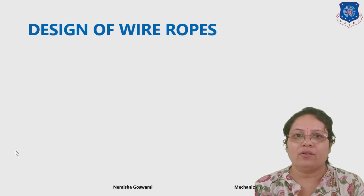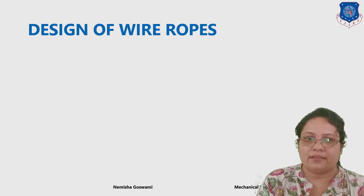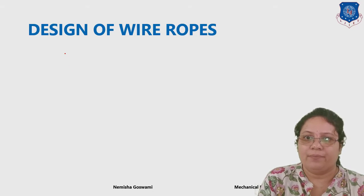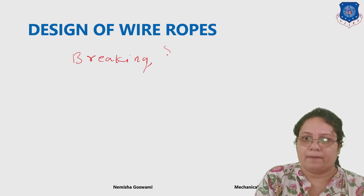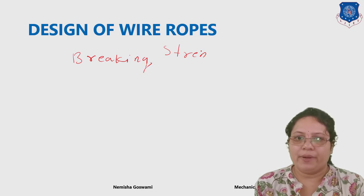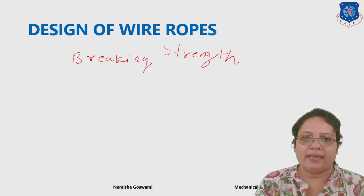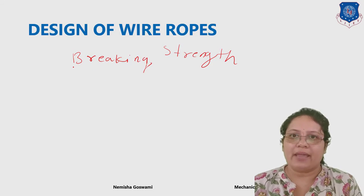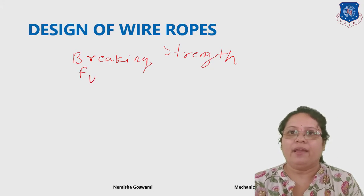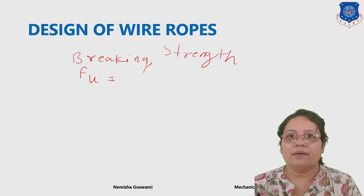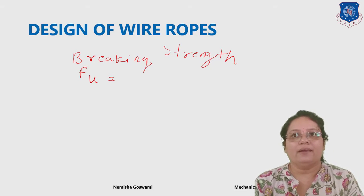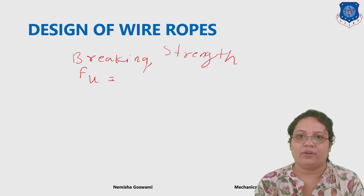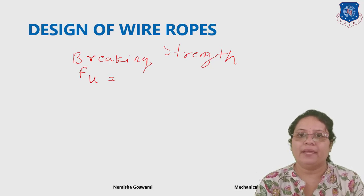Wire ropes are designed on the basis of breaking strength. Breaking strength is denoted by FU. FU is your breaking strength, and this breaking strength indicates the maximum static load that a wire can take without failure. This is known as breaking strength.